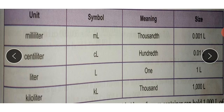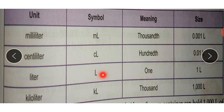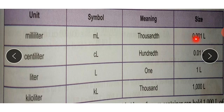Here are the conversions: one milliliter (ml) equals 0.001 liter; one centiliter (cl) equals 0.01 liter; one liter equals one liter; and one kiloliter equals 1000 liters. So one milliliter is 0.001 liter, one centiliter is 0.01 liter, one liter is one liter, and one kiloliter is 1000 liters.